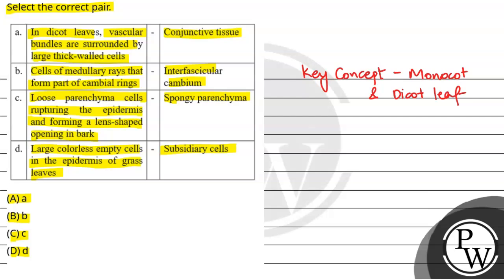So coming back to the question. First pair: in dicot leaves, the vascular bundles are surrounded by large thick walled cells, which is called the conjunctive tissue. Conjunctive tissue is basically the parenchyma which is present between the xylem and phloem.